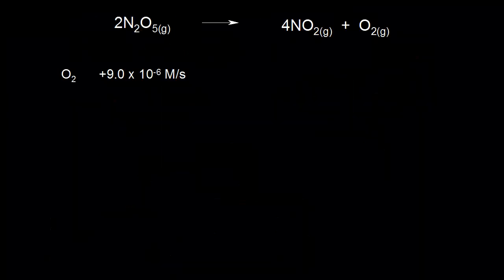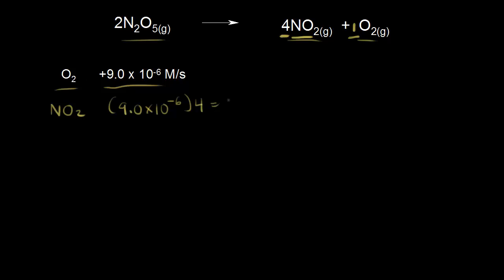Now let's look at a more complicated reaction: the balanced equation for the decomposition of dinitrogen pentoxide into nitrogen dioxide and oxygen. Let's say oxygen forms at a rate of 9×10⁻⁶ molar per second. What is the rate of formation of nitrogen dioxide? Looking at the balanced equation, for every one mole of oxygen that forms, four moles of nitrogen dioxide form. So we multiply the rate of formation of oxygen by 4, giving us 3.6×10⁻⁵ molar per second. NO₂ forms at four times the rate of O₂.